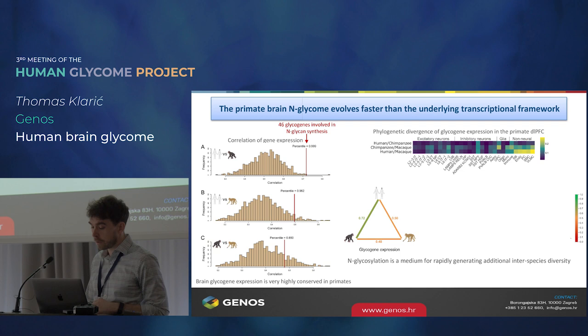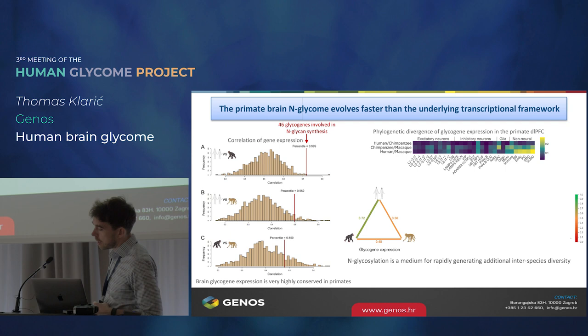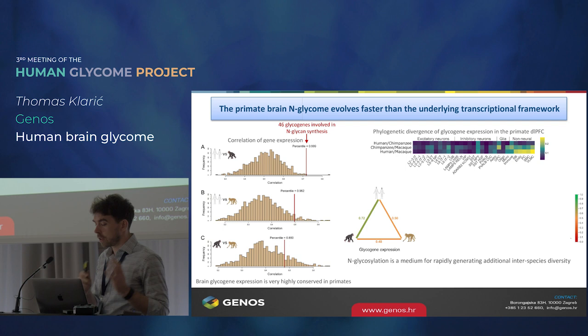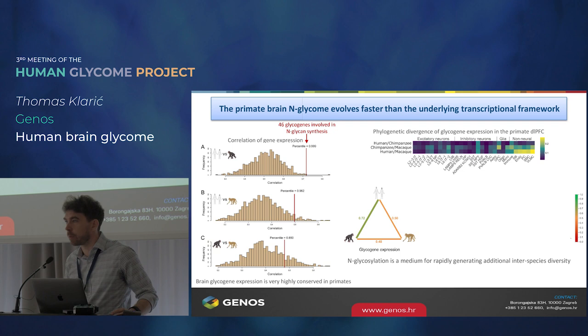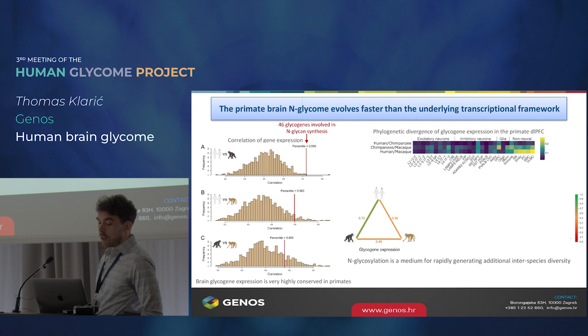The correlation of glycogene expression between the three primate species is very high. But when we compare that to the correlation of the N-glycome globally, the N-glycome correlation is lower for each primate pair than it is for glycogene expression. And the interaction between glycogene expression and the brain N-glycome phenotype is even less well conserved. Altogether, this data tells us that the primate brain N-glycome evolves faster than the underlying transcriptional framework — something glycobiologists have been saying for a long time: that N-glycosylation is a medium for rapidly generating additional interspecies diversity. It's nice to show this is also the case in the brain.